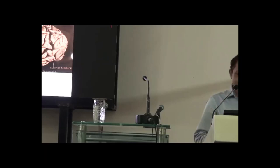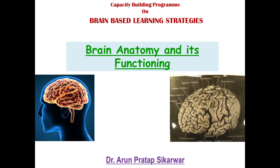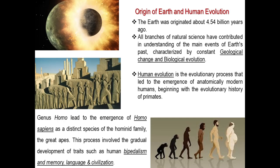I took this topic on brain anatomy and its functioning, and how the brain is important for everyone — it is not solely the property of a neurobiologist. This brain is part of the human body, so I'll go back to the evolutionary part — how the brain came up in the human body, and before that how humans themselves evolved. As you all know, the Earth is 4.6 billion years old. Human evolution is the evolutionary process leading to the emergence of anatomically modern humans, beginning with the evolutionary history of primates.